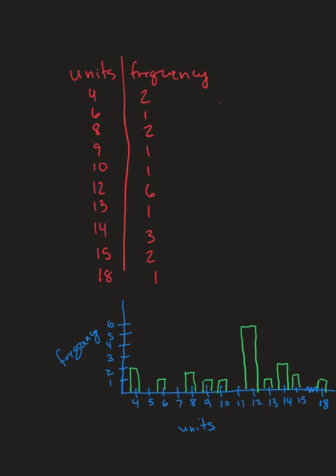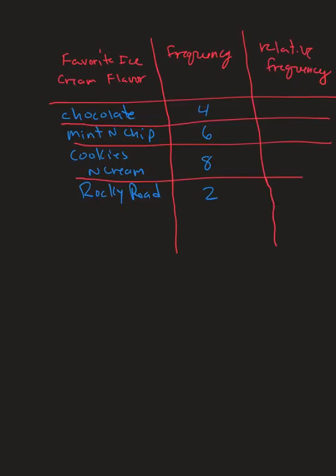Notice we did not use relative frequency for this. So to make the bar graph slash histogram, we just need frequency. Next we're going to look at making a pie chart. I wanted to use an example that would not be quite as messy as the previous example. So let's say that I asked the same 20 students what their favorite ice cream flavor was. And I only gave them four choices. They had to pick from these four because I'm going to have a big ice cream party. You can see the frequency. Four people picked chocolate ice cream. Six people picked mint and chip. Eight people picked cookies and cream. Cookies and cream wins every time. And only two people picked Rocky Road.